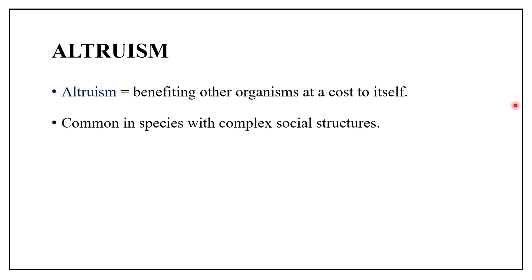For simplicity, you can say that there can be two types of organisms: altruistic and selfish. If someone is drowning, an altruist would jump in and try to save him or her, whereas the selfish would not.